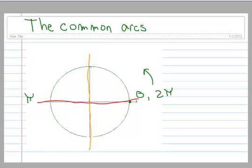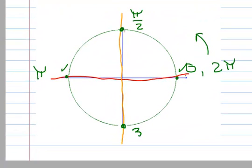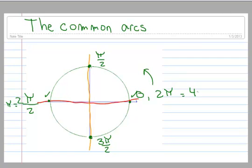If I look at this top semicircle, the distance from this point here to this point here is pi. If I go just half of it, I've gone pi over two. Using the same logic, if I go three quarters of the way around then I've gone three pi over two. If you wanted to have all of these with the same denominator, then this would be two pi over two, which reduces to pi. And over here that would be four pi over two, which reduces to two pi.